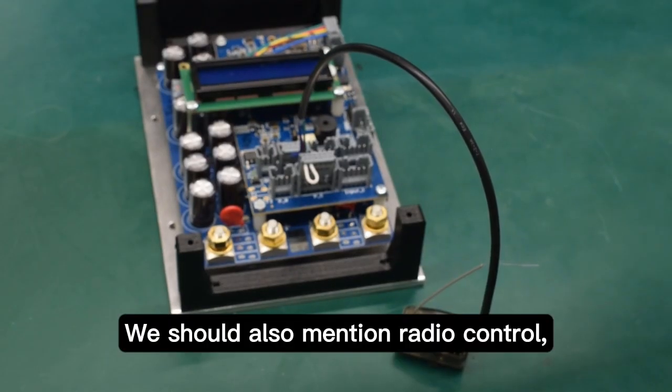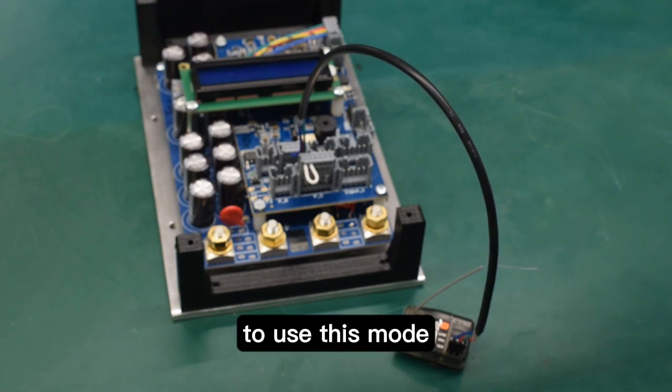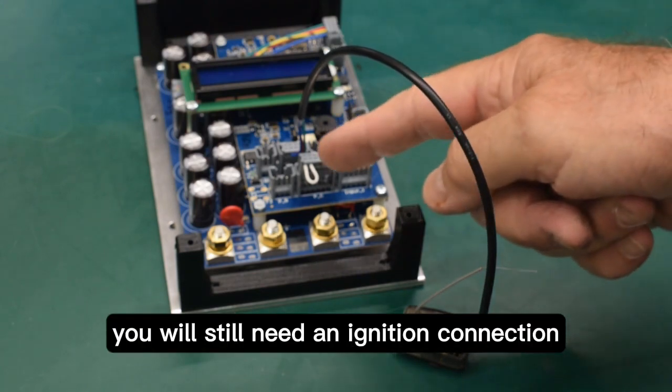We should also mention radio control. To use this mode you will still need an ignition connection across A and B.